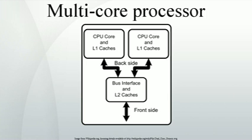Texas Instruments produces the TMS320-C6ATMVP (5-core multimedia video processor) and TMS320-C66 (2, 4, or 8-core DSP). TILERA offers the TILE-64 (64-core, 32-bit processor), TIL-GX (72-core, 32-bit processor), and TIL-GX (72-core, 64-bit processor). XMOS produces the Software-Defined Silicon Quad-Core XS1-G4.